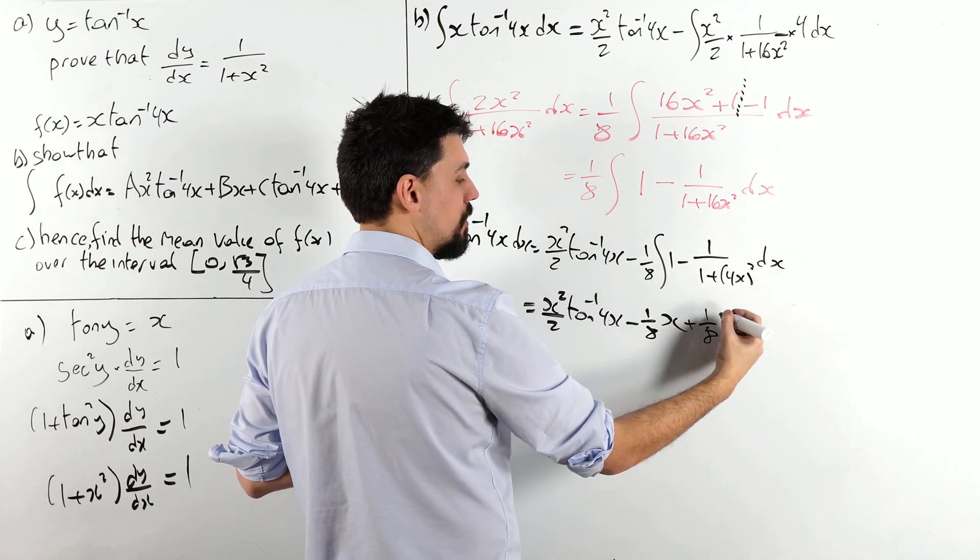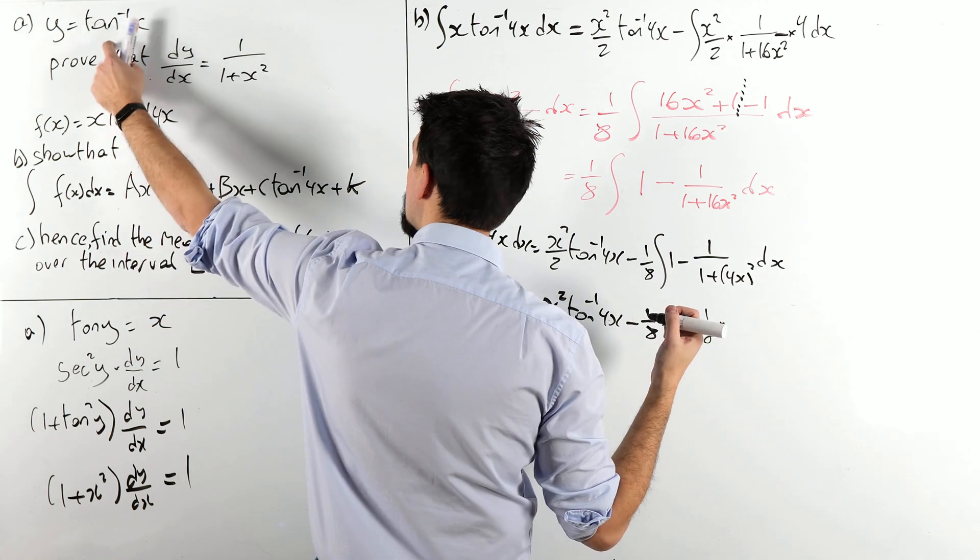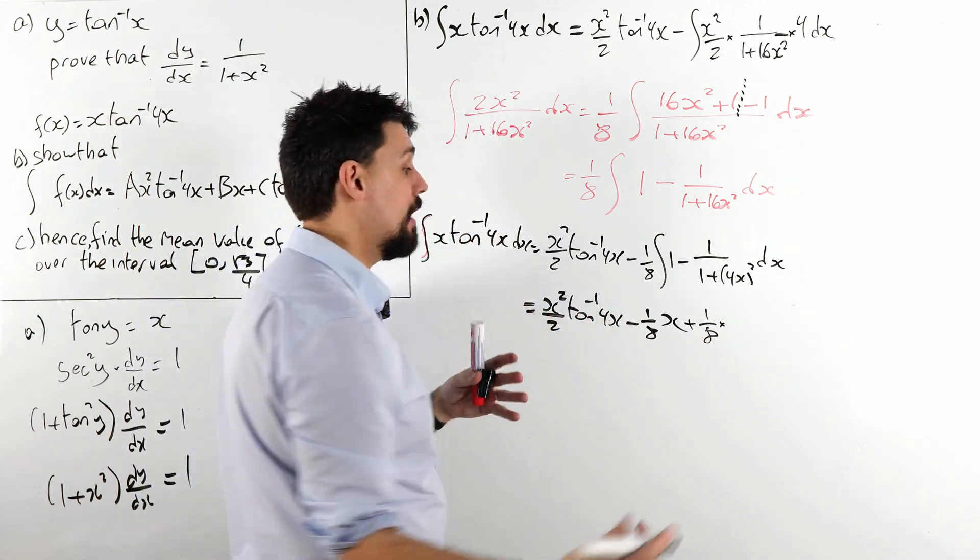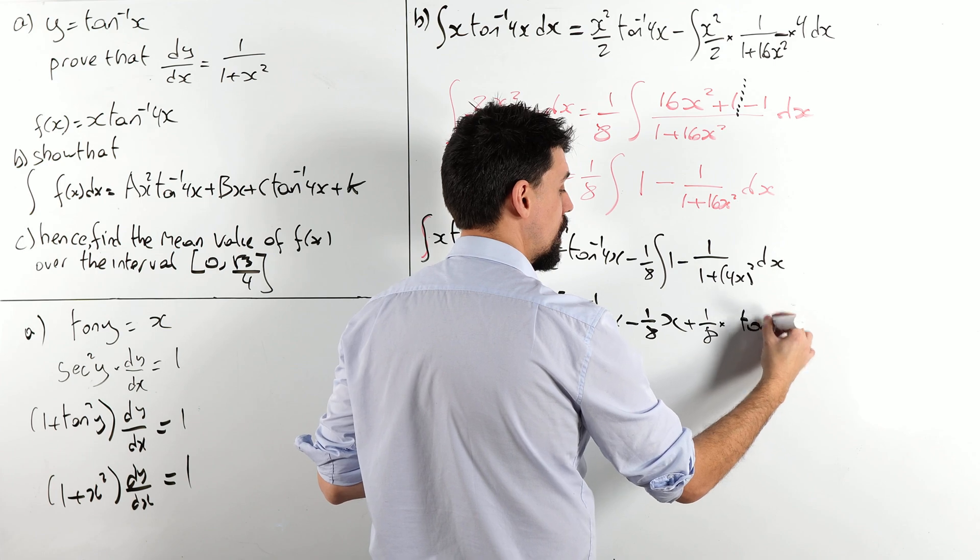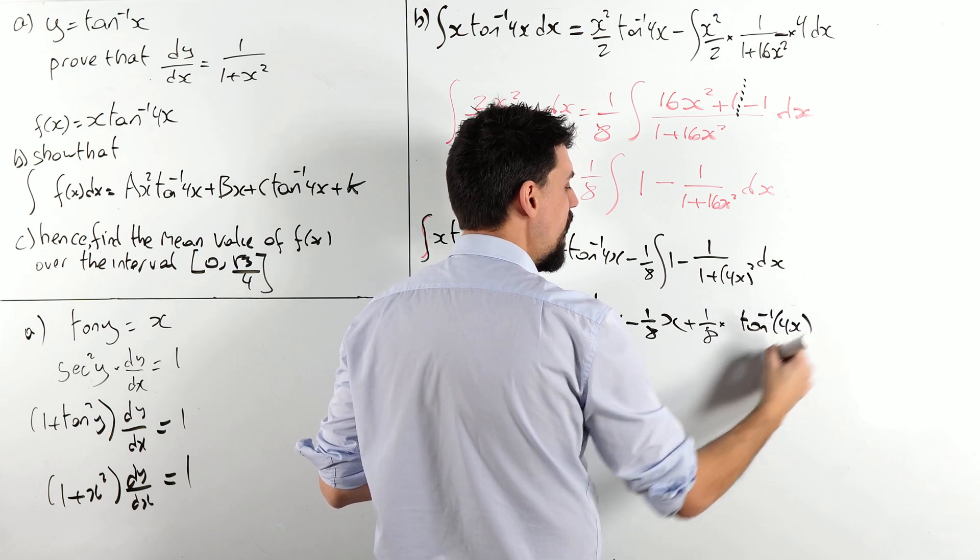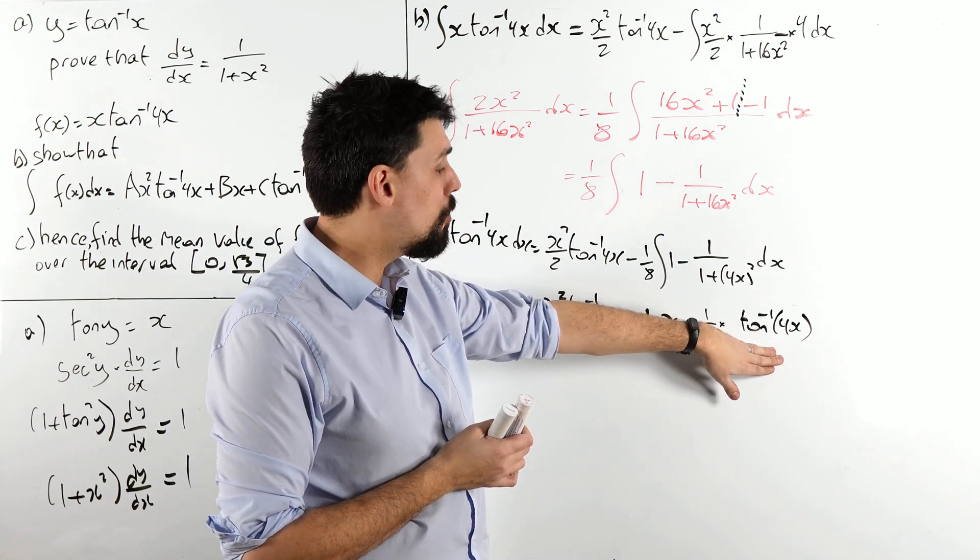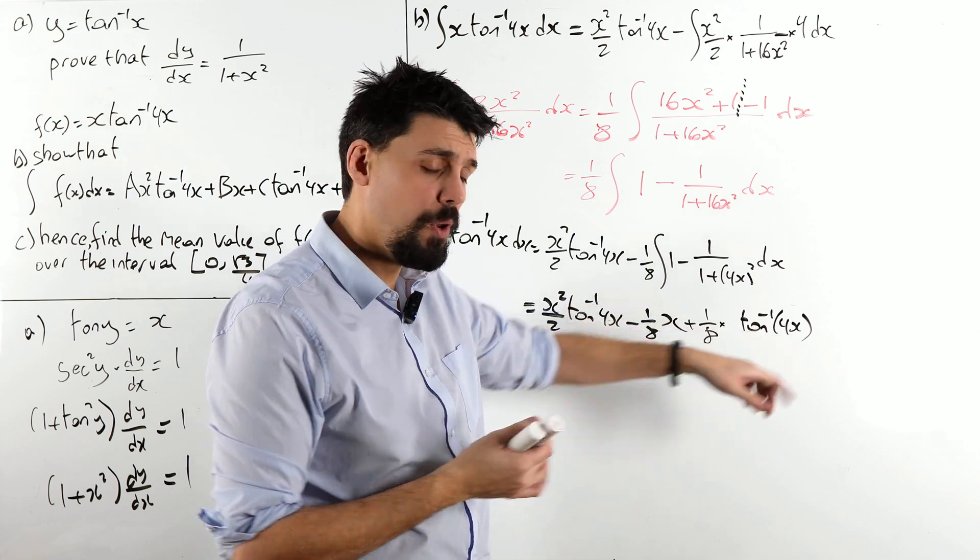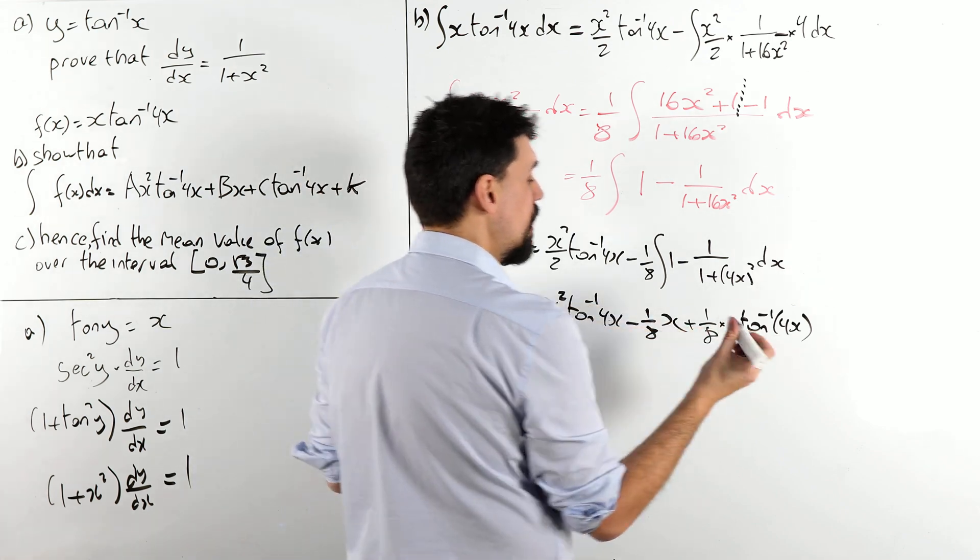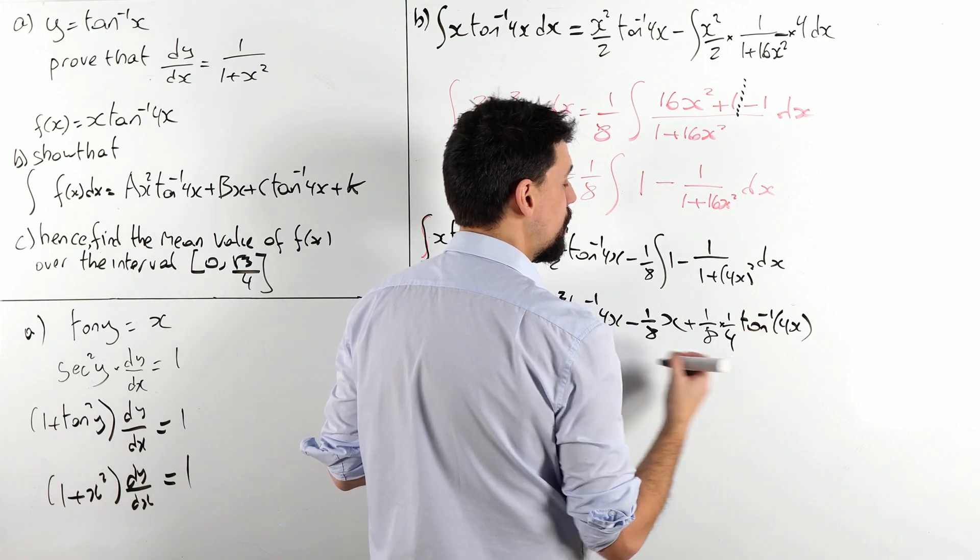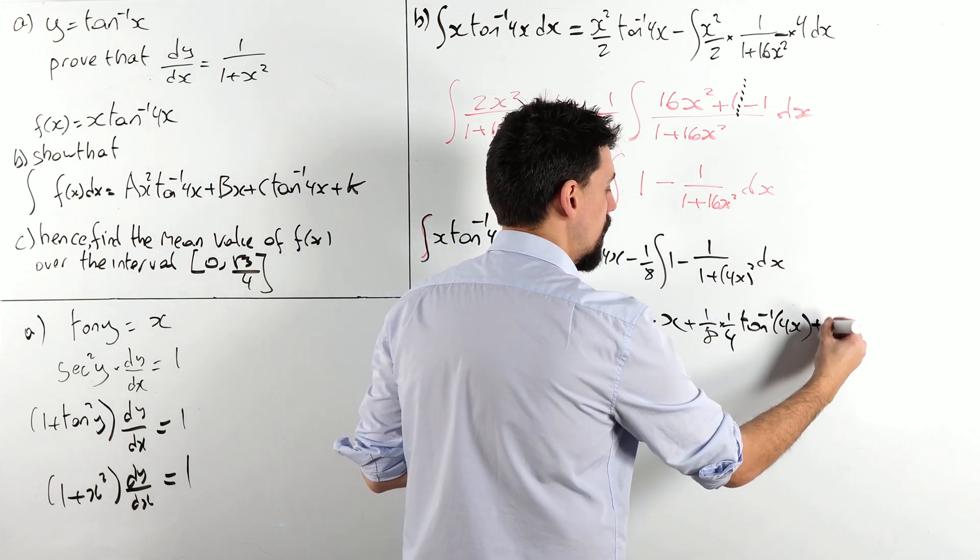Now, 1 over 1 plus 4x squared, well, from this, I know it's going to be a tan minus 1 of 4x. I do need to be careful, if I differentiate this, there will be a chain rule popping in, a times 4 will appear, I don't want a times 4, so I'm going to need to divide this by 4, and I'll tidy up in a second, plus k.